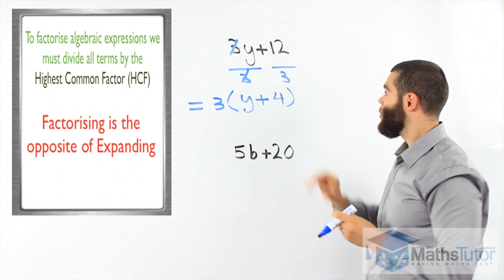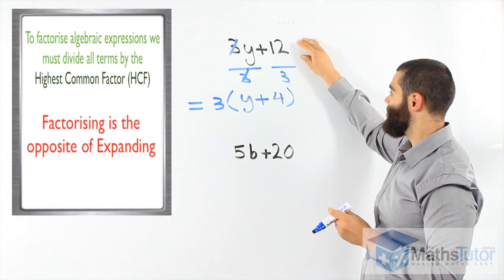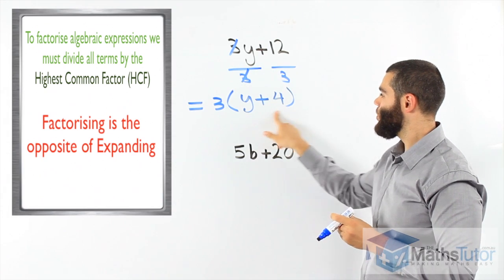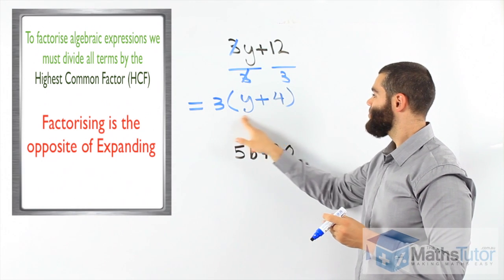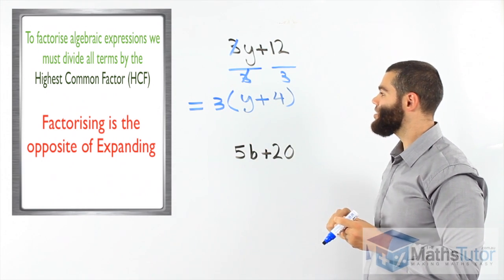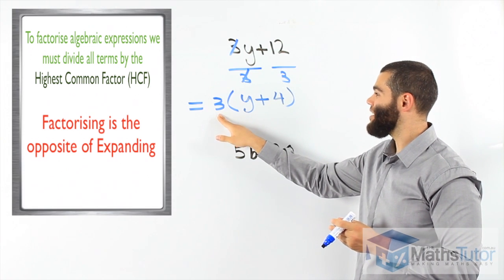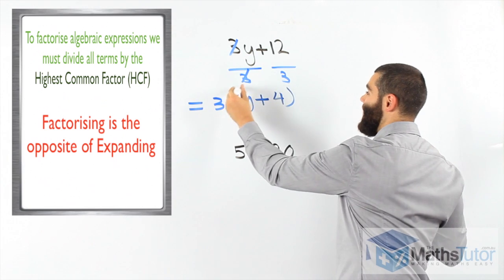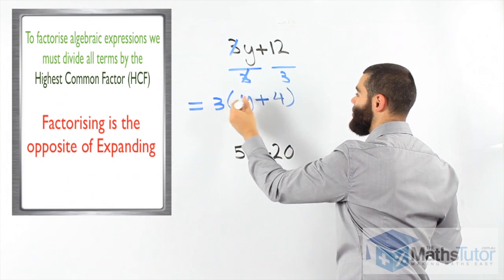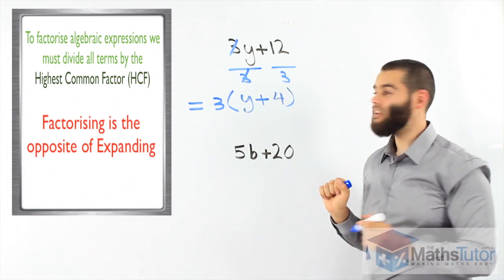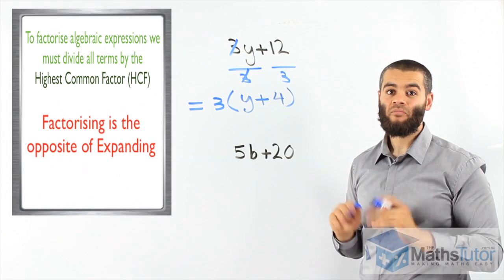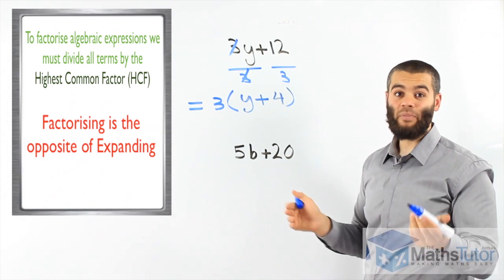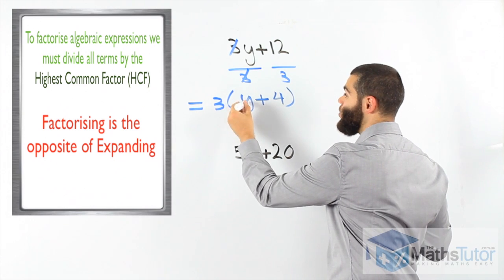So, now we are going the other way around. We're going from here and we are factorising and we go back to our form in brackets or in a way where it is written where the highest common factor is outside and we have our brackets and the y plus 4 inside. So, if you want to know, did I factorise correctly, well, all you need to do is expand again.